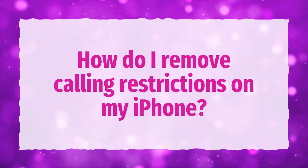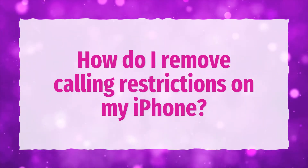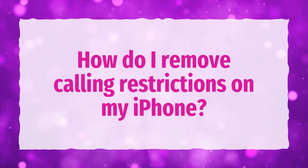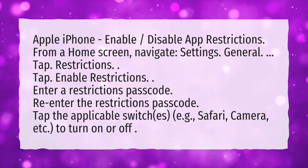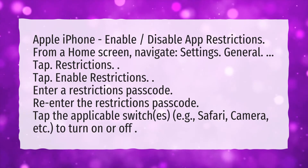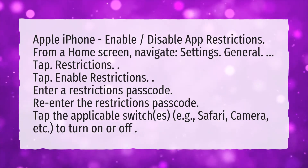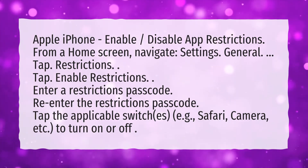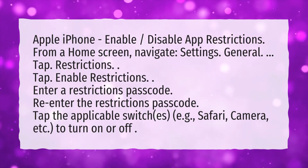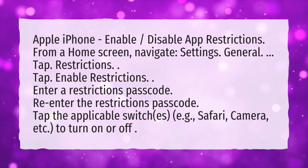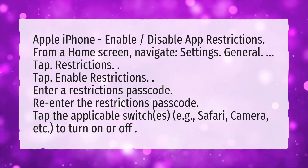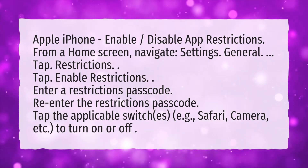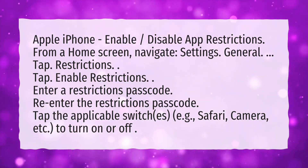How do I remove calling restrictions on my iPhone? Apple iPhone — enable or disable app restrictions. From a home screen, navigate to Settings, then General, then tap Restrictions.